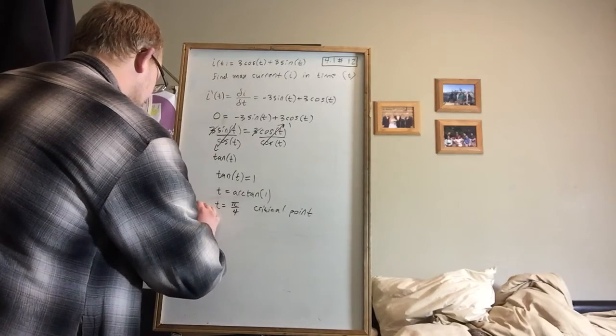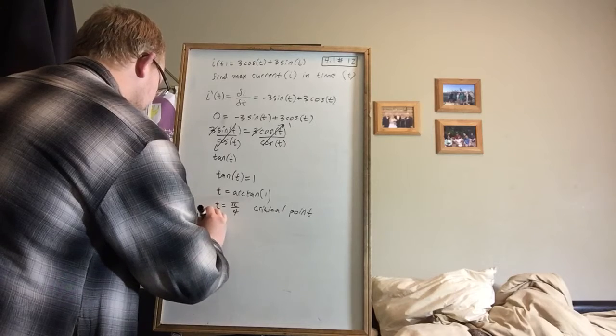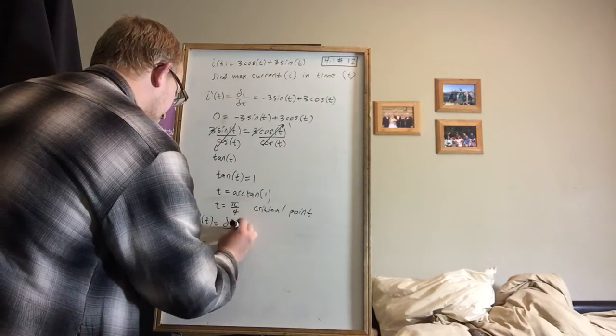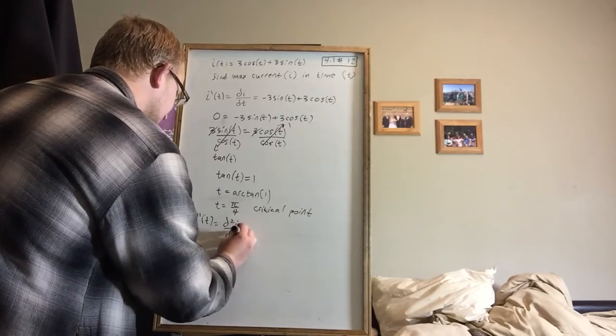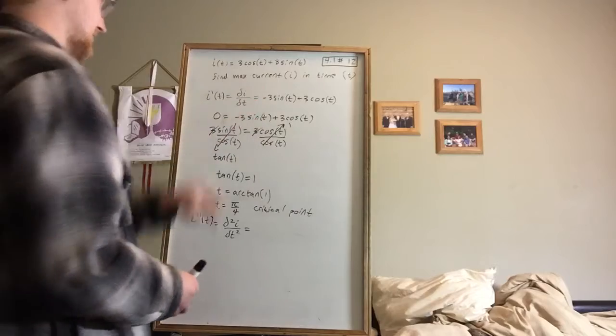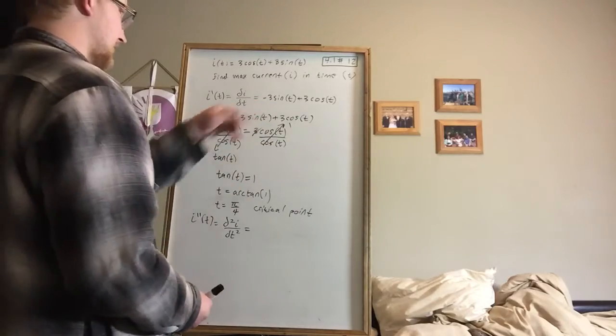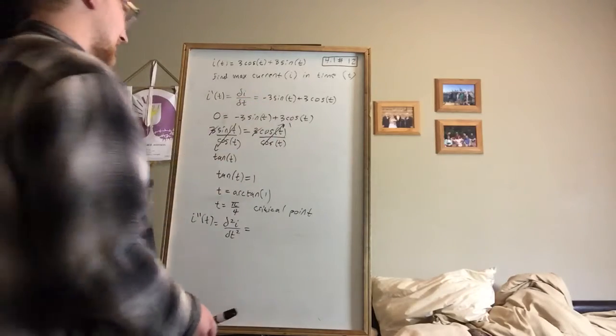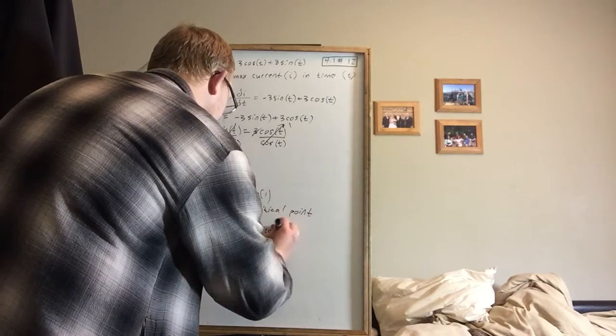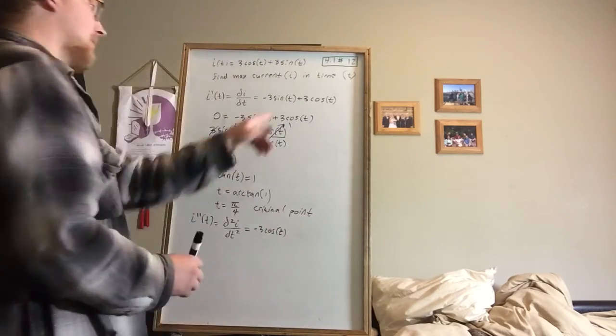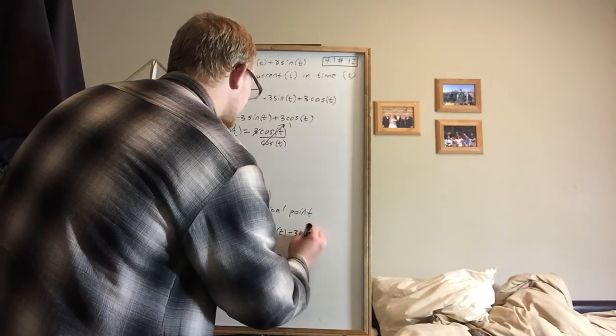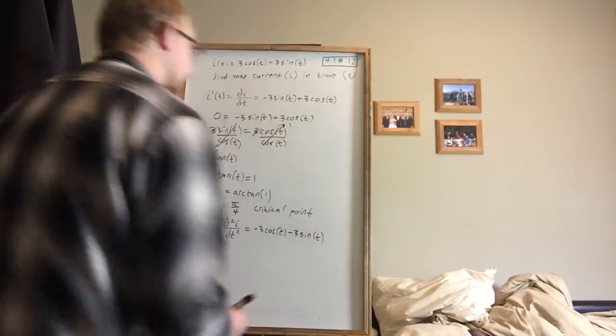So we're going to go ahead and take i double prime of t, and write this as d squared i dt squared. And that's going to be the derivative of the first derivative, making it the second derivative. So negative 3 sine of t, that's going to be negative 3 cosine of t when we take the derivative. Positive 3 cosine of t is going to be negative 3 sine of t when we take the derivative.